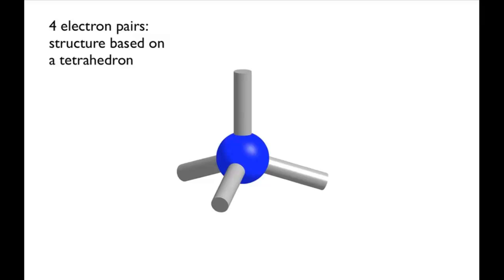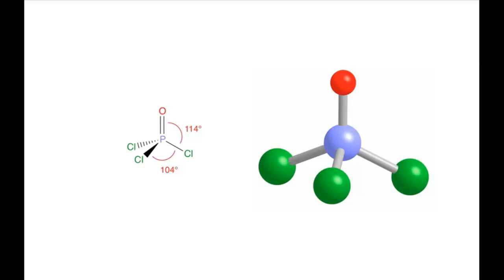The double bond takes up more space than a single bond, as it consists of two electron pairs. It repels the other electron pairs more than a single bond. This leads to distortions in the tetrahedron, with the OPCl angles wider than the ClPCl angles.